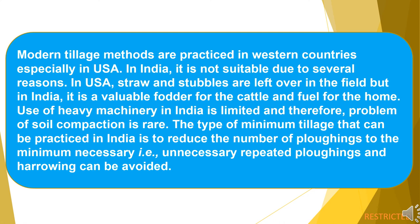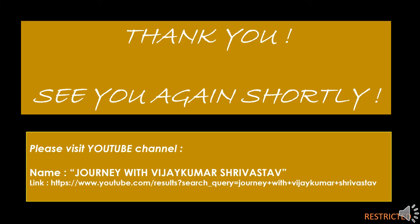Modern tillage methods are practiced in western countries, especially in the USA. In India, they are not suitable due to several reasons. In the USA, straw and stubble are left over in the field, but in India they are valuable fodder for cattle and fuel for the home. Use of heavy machinery in India is limited, and therefore the problem of soil compaction is rare. The type of minimum tillage that can be practiced in India is to reduce the number of plowings to the minimum necessary — unnecessary repeated plowings and harrowing can be avoided. This was all about the modern concept of tillage. Thank you very much, see you again shortly. Please visit the channel, subscribe, and provide your kind and valuable feedback for further improvements.